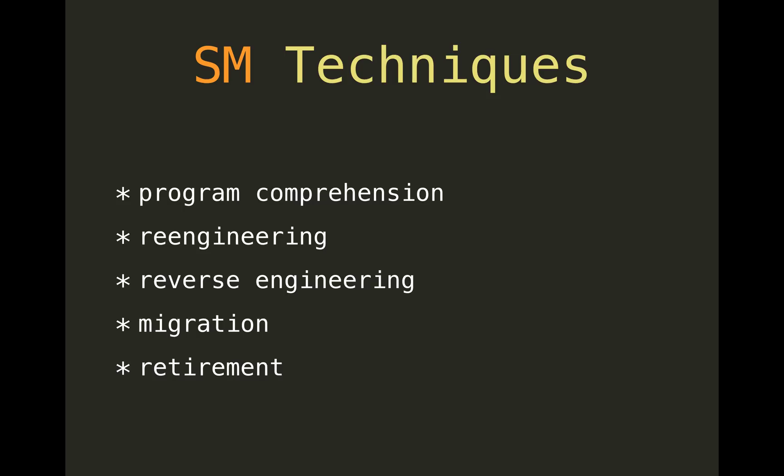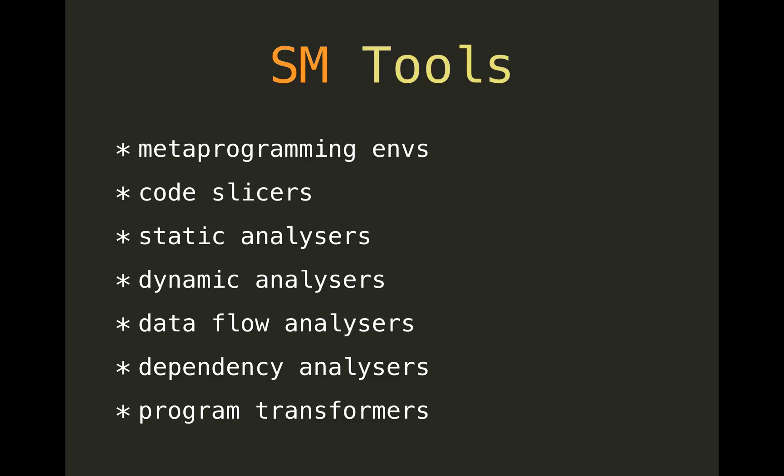Migration is about moving between platforms, usually migrating legacy software to something less legacy. Retirement is when you want to get rid of a system but it's still in use. There are also quite a lot of software maintenance tools: metaprogramming environments that write programs to do stuff to other programs, program slicing tools that focus on aspects related to a particular object, static analyzers that analyze source code, dynamic analyzers that analyze runtime events and log books, data flow and control flow analyzers, dependency analysis tools, and transformation tools, among many others.